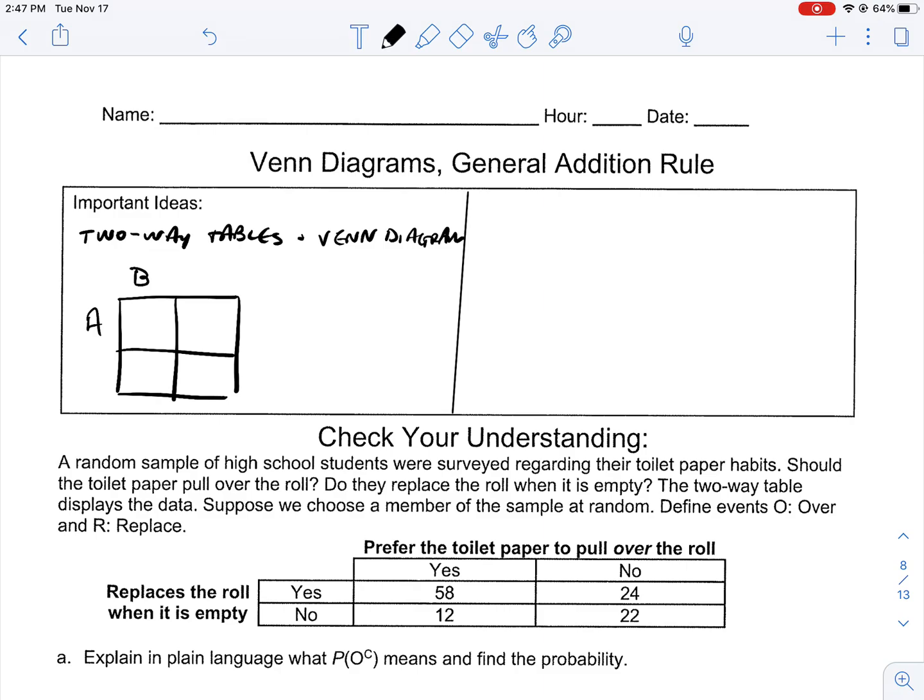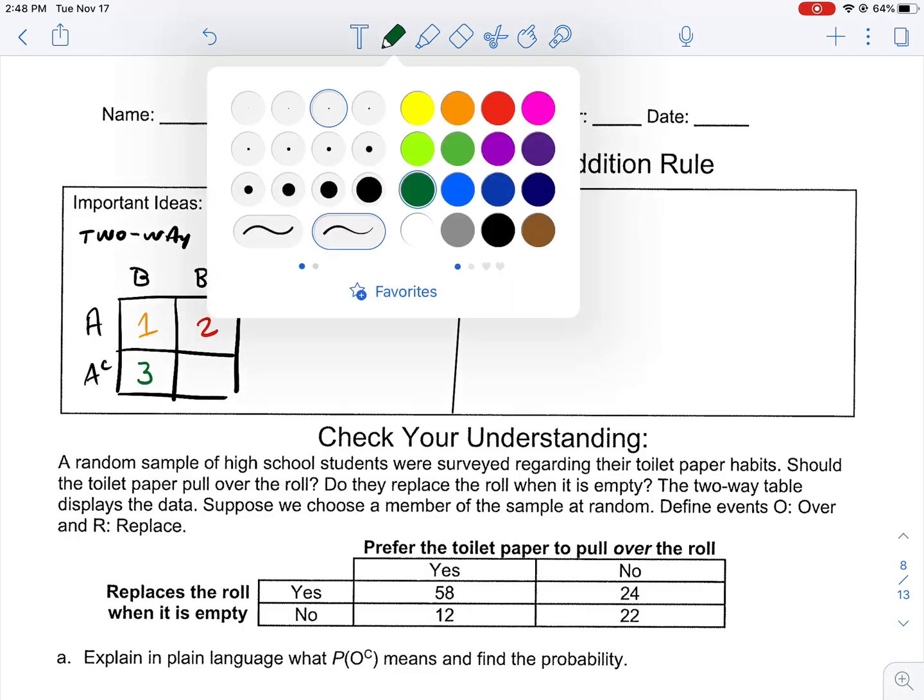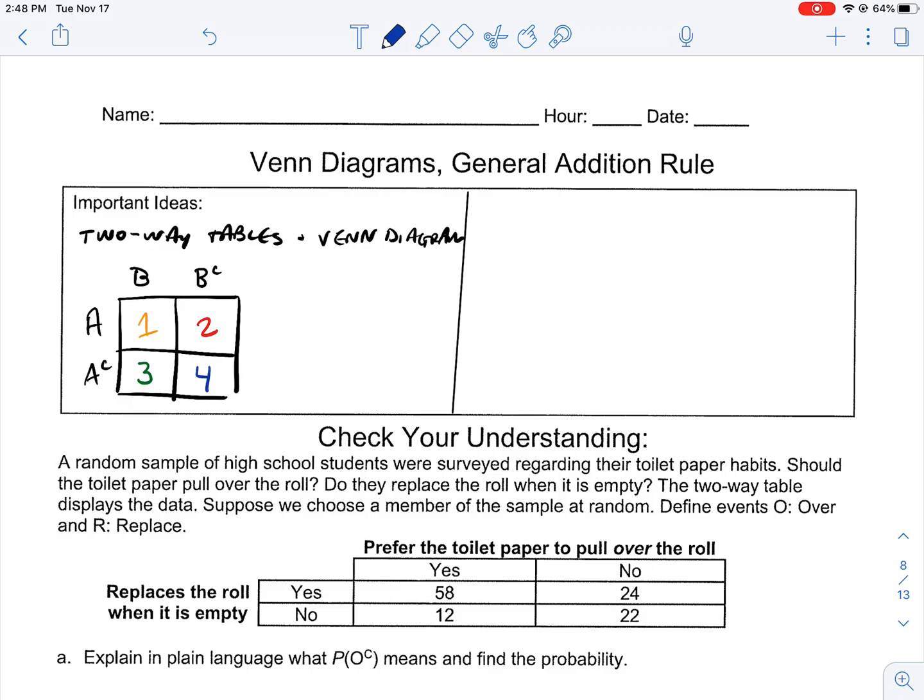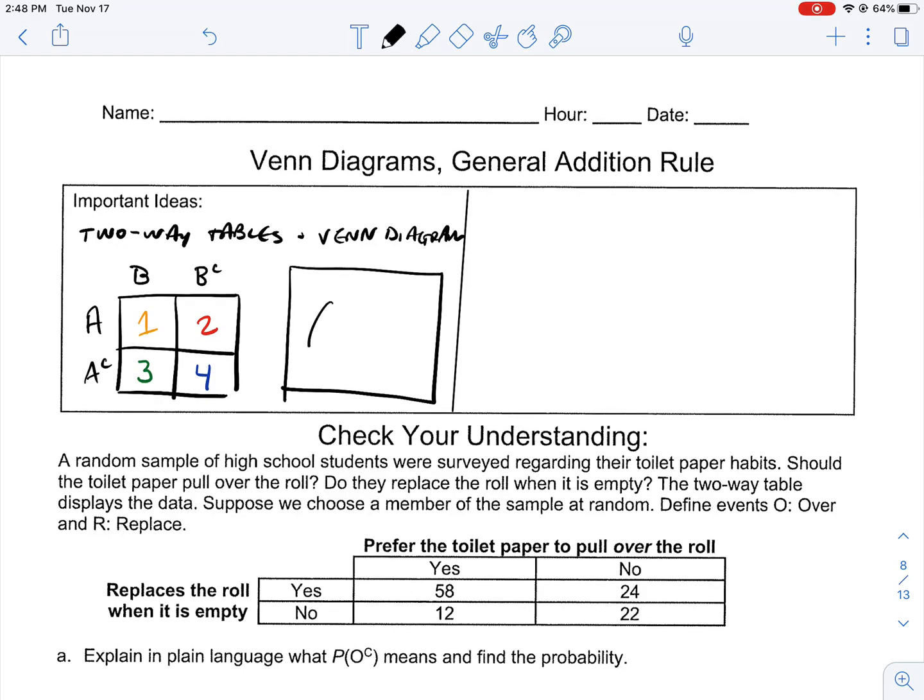If I draw a two-way table over here and we consider the events that could possibly happen, let's look at the probability of two different events happening. I've got A and I've got B here. On this horizontal up above, it's going to be B or B complement, either B happens or B does not happen. And on the vertical, it's going to be A or A complement, either A happens or it doesn't.